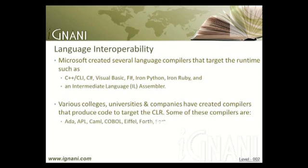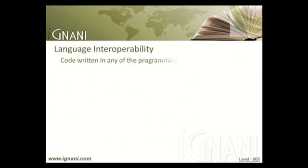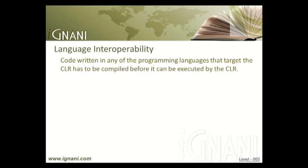Some of these third-party compilers include: Ada, APL, Camel, Cobol, Eiffel, Forth, Fortran, Haskell, Lexico, Lisp, Logo, Lua, Mercury, ML, Mondrian, Oberon, Pascal, Perl, PHP, Prolog, RPG, Scheme, Smalltalk, TCL, and TK. Code written in any of these programming languages has to be compiled before it can be executed by the CLR.